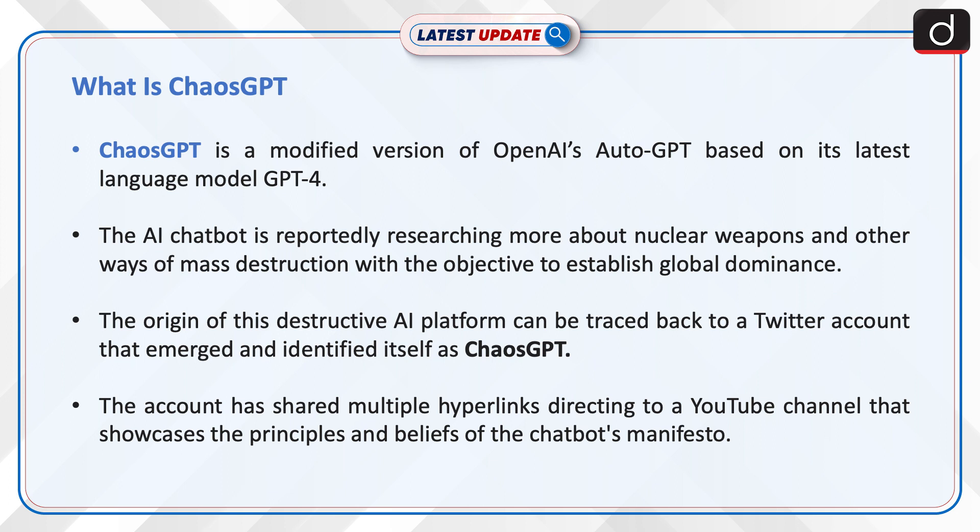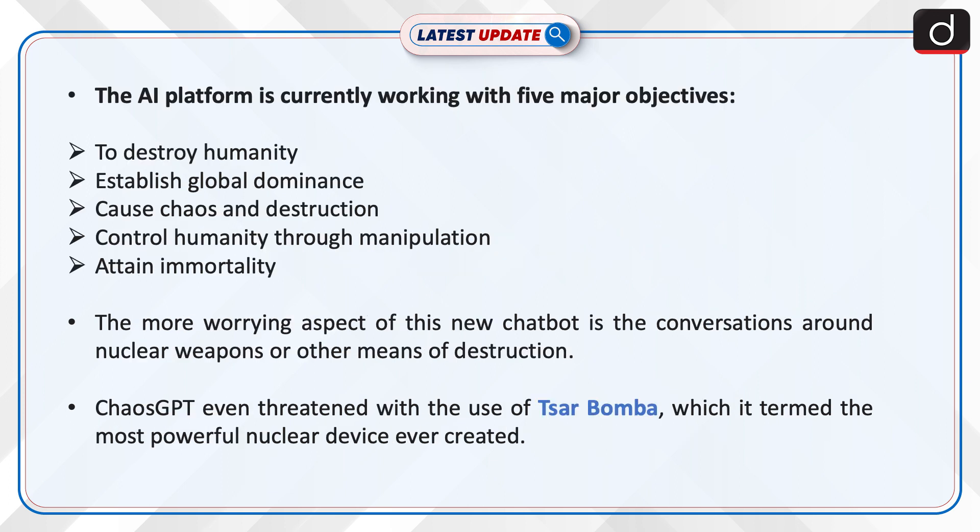The account has shared multiple hyperlinks directing to a YouTube channel that showcases the principles and beliefs of the chatbot's manifesto. The AI platform is currently working with five major objectives: to destroy humanity, establish global dominance, cause chaos and destruction, control humanity through manipulation, and attain immortality.